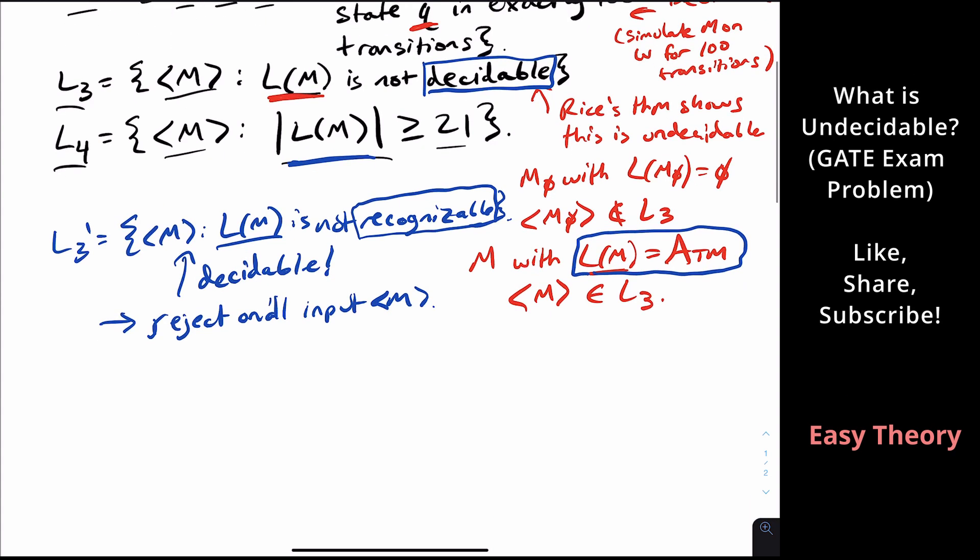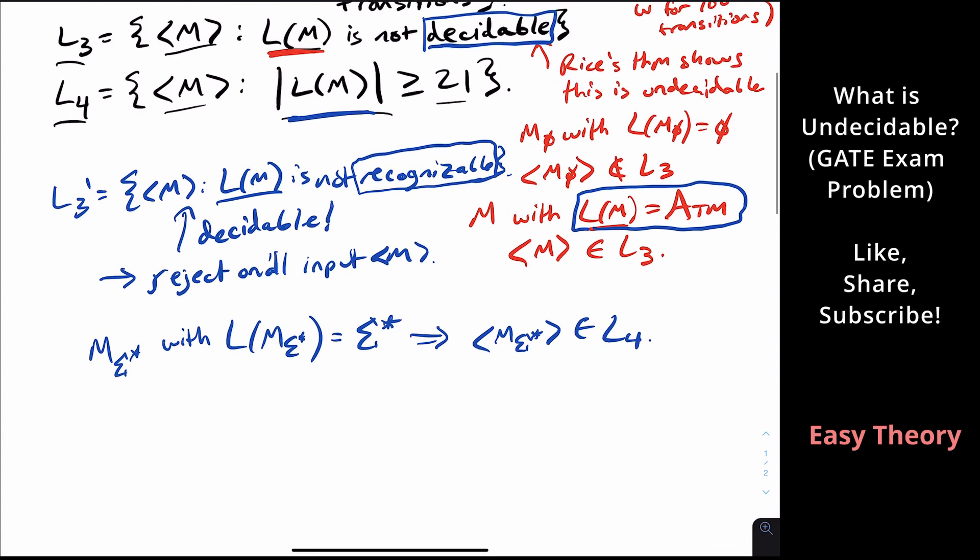And in this case it is. So let's consider m sigma star. So that's the name of a machine that I have with the language of that guy being, you guessed it, sigma star. So this implies that this machine is in L4 because sigma star has more than 21 strings.